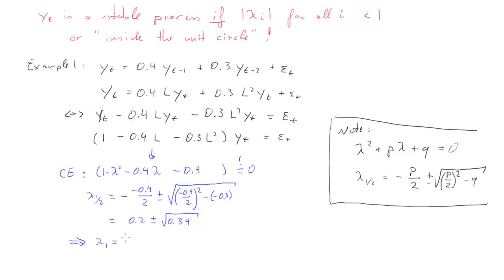lambda_1, and that is equal to 0.2 plus, and the square root of 0.34 turns out to be 0.5831. So the first solution is 0.7831. The second solution is going to be 0.2 minus that square root value, and that turns out to be negative 0.383.